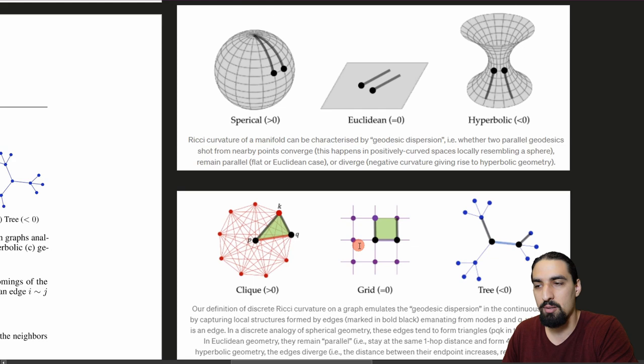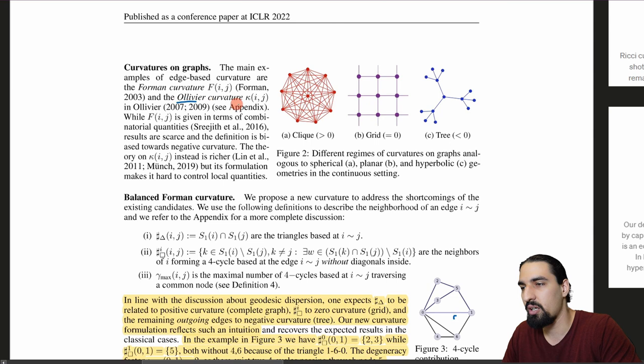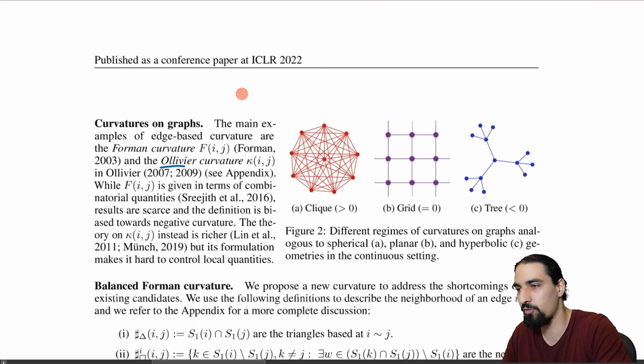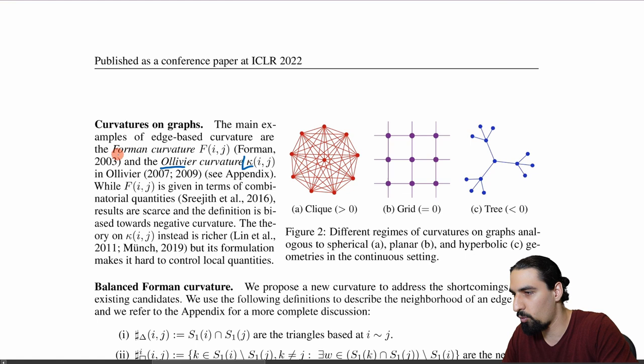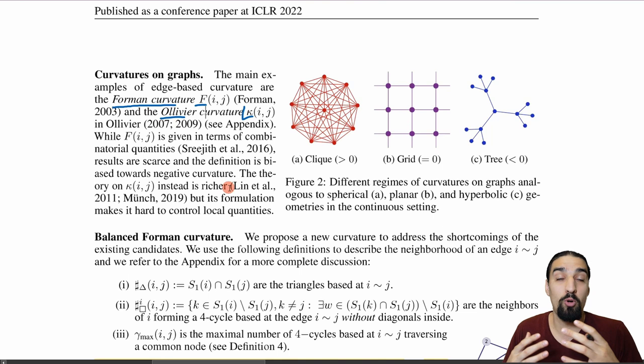There are two discrete variants of Ricci curvature for graphs: Ollivier curvature, denoted with an italic K symbol, and Forman curvature, denoted as big F. Ollivier is much more expressive but computationally expensive. Forman has the opposite trade-off — more efficient but less expressive. The authors took the Forman curvature and upgraded it to a 'balanced Forman curvature.'